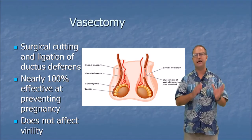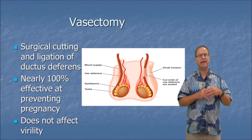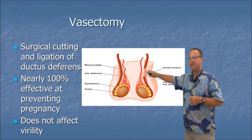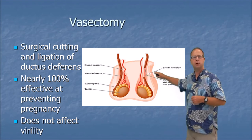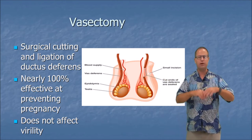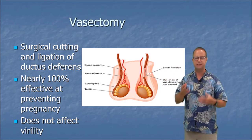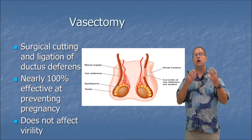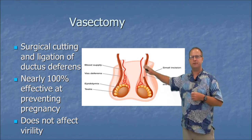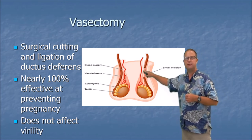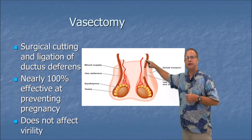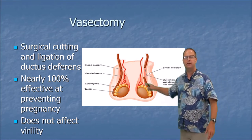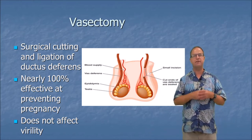While on the subject of the vas deferens, we need to talk about a vasectomy. A vasectomy is a cutting of the vas deferens as a form of birth control. If you've had two kids and don't want more, a vasectomy severs and ligates the vas deferens, making it unlikely spermatozoa will travel from the epididymis to the urethra. It has over a 95% effectiveness rating.